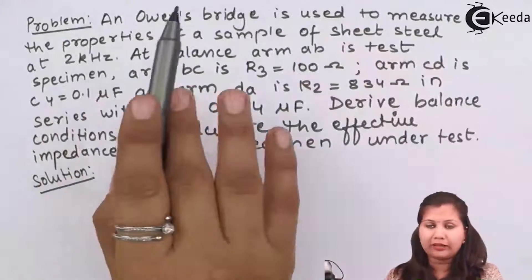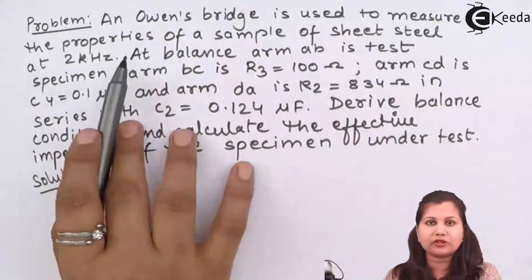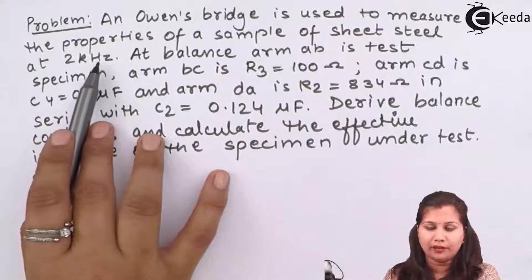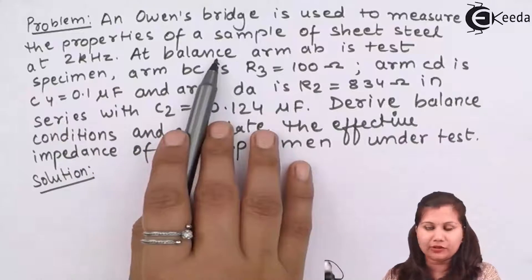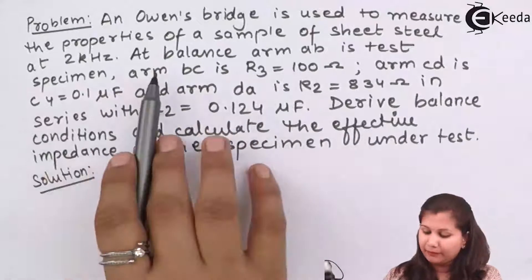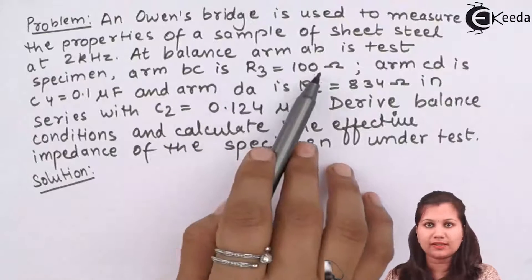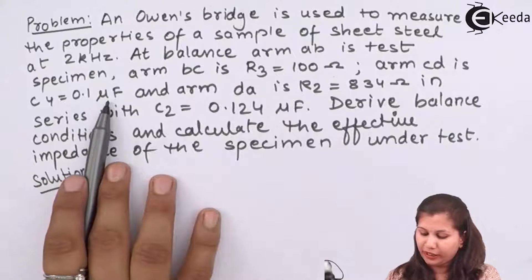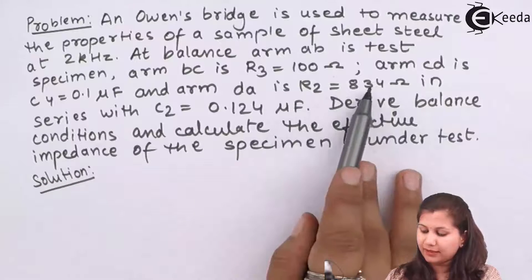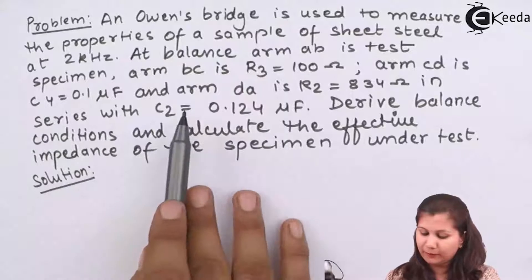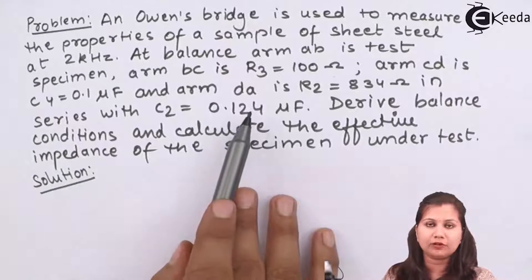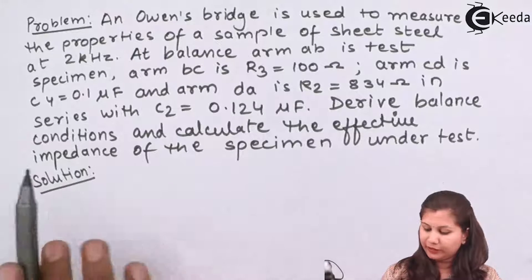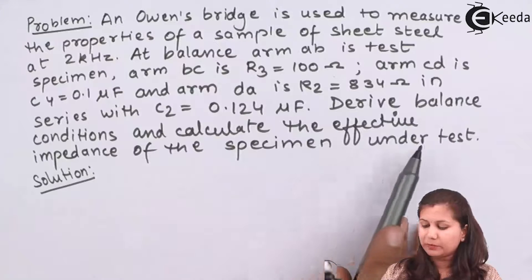Our problem is: we are given an Ohms bridge which is used to measure the properties of a sample of sheet, and this sheet is kept at two kilohertz frequency. At balance conditions, arm AB is the test specimen, BC is the resistance R3 which is 100 ohms, CD is the capacitance C4 of 0.1 microfarad, and DA is the resistance 834 ohms connected in series with capacitor C2 that is 0.124 microfarad. We have to derive the balance conditions and calculate the effective impedance of the specimen under test.